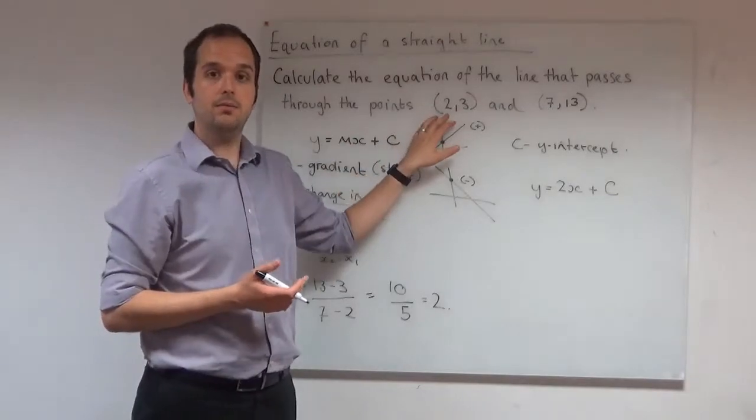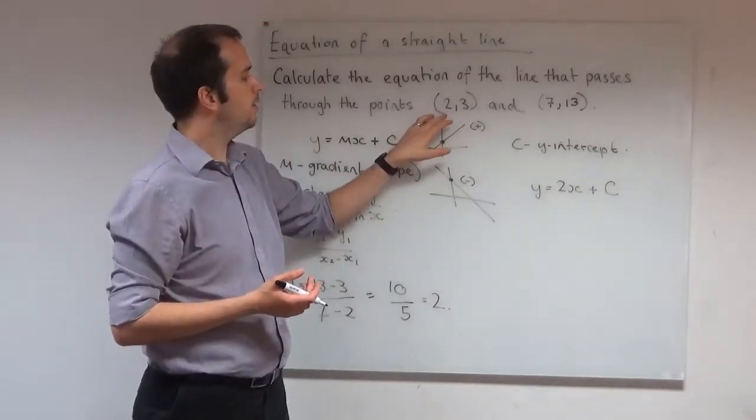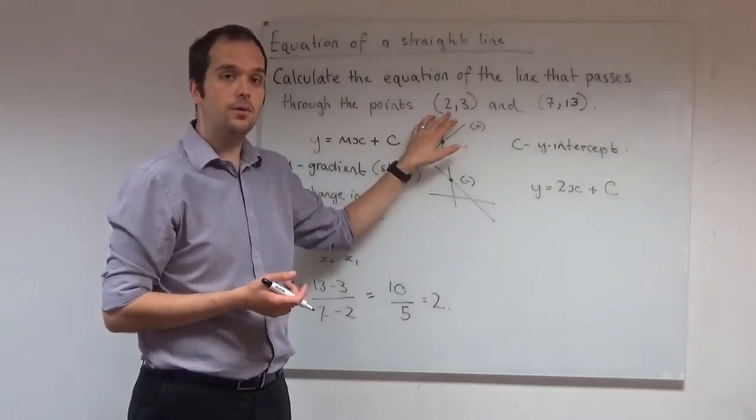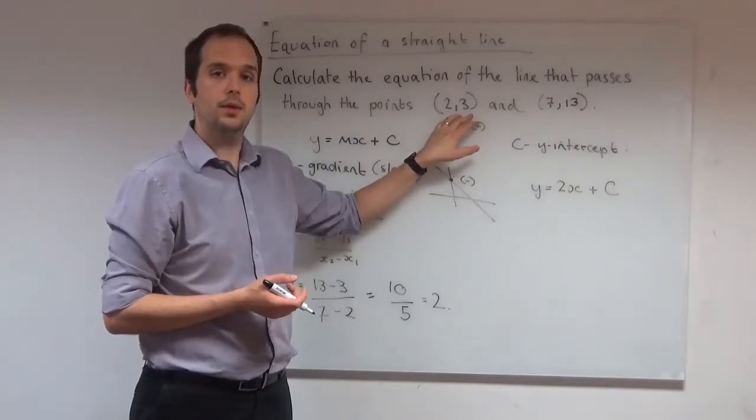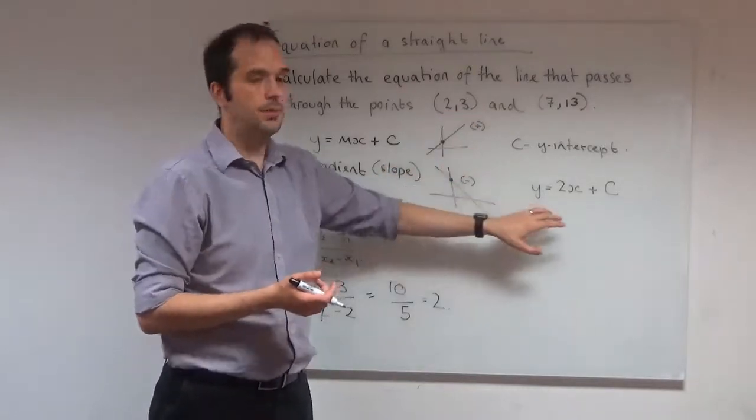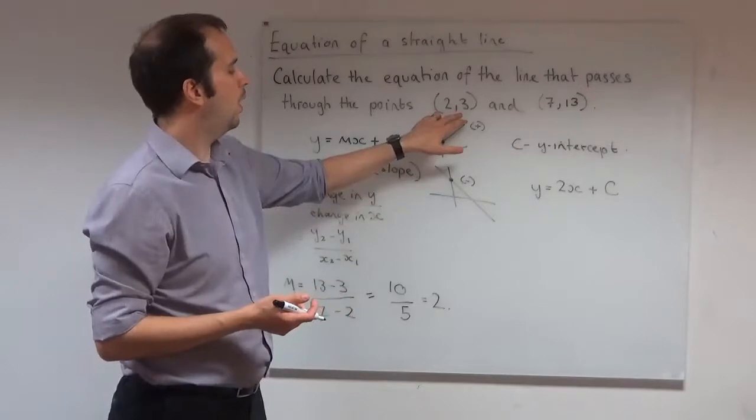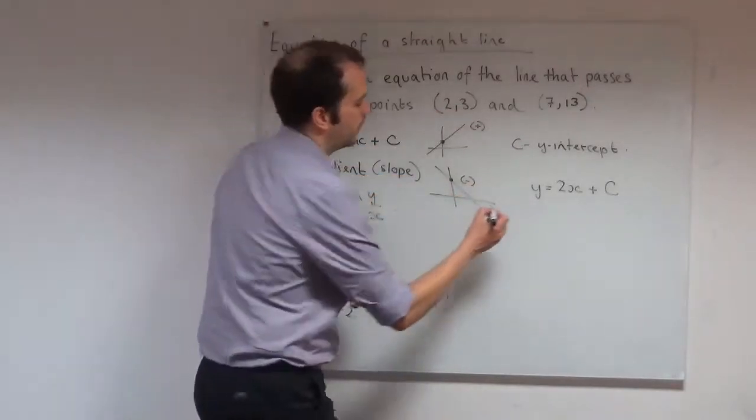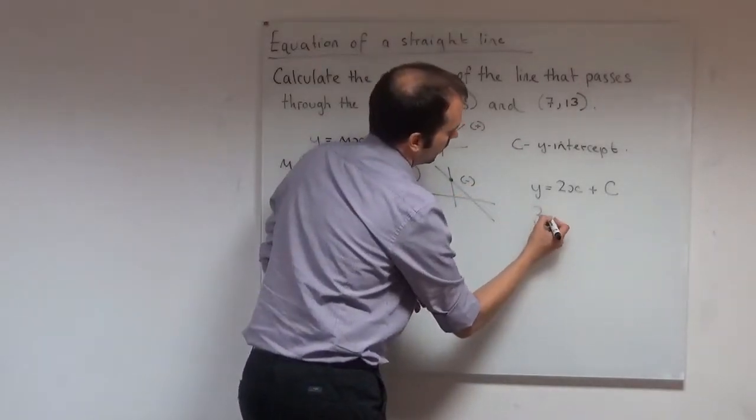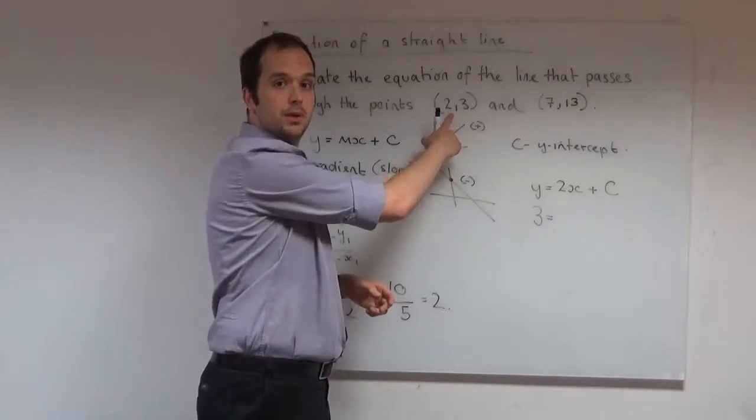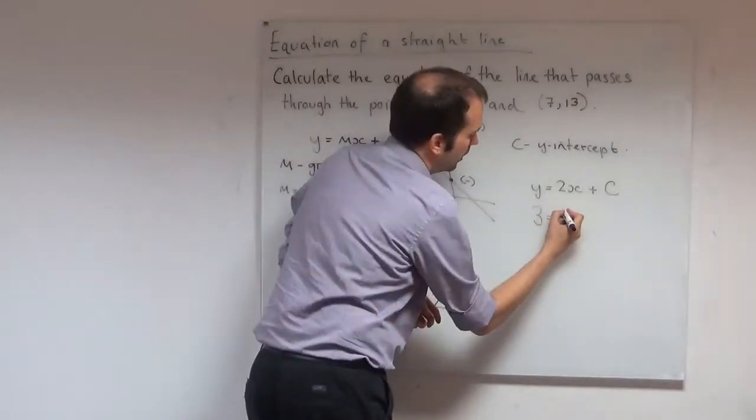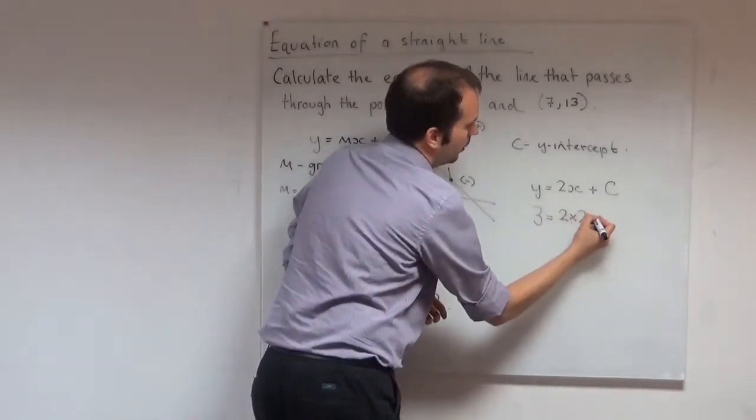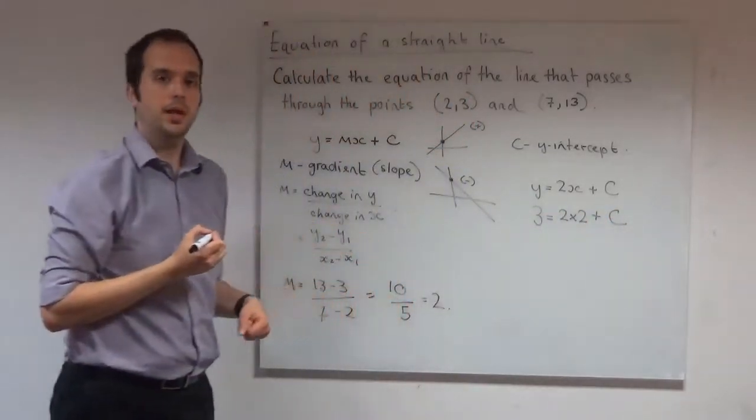So I'm going to take this point here, (2,3), and this means x is equal to 2 and y is equal to 3. Let's substitute that in. So y is equal to 3. x we said was equal to 2. 2 times 2 plus c.